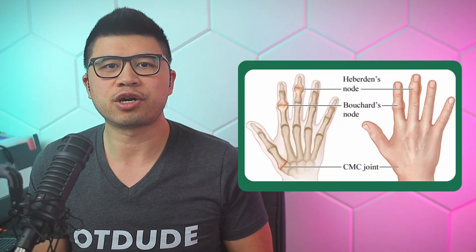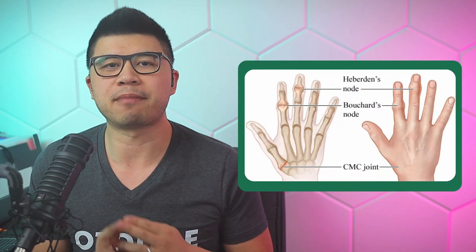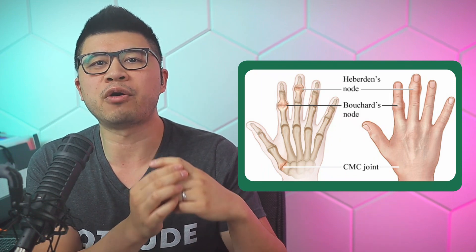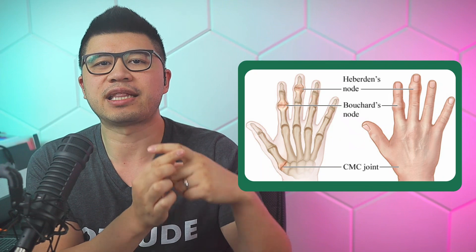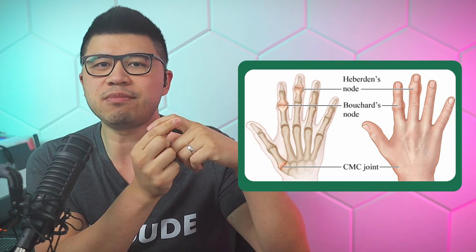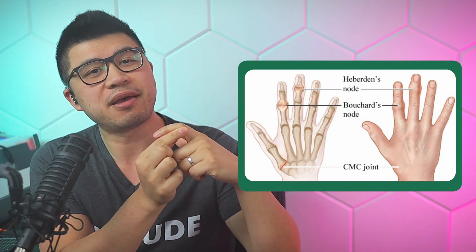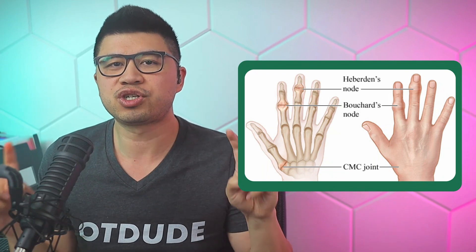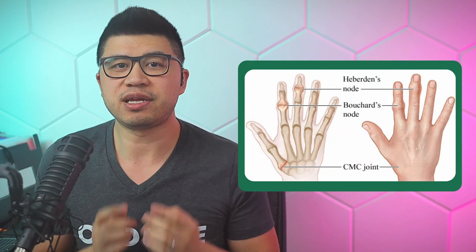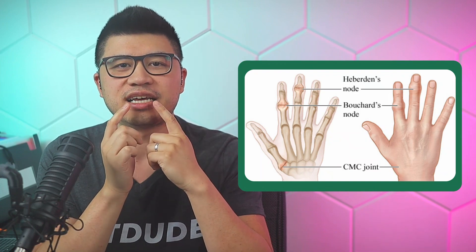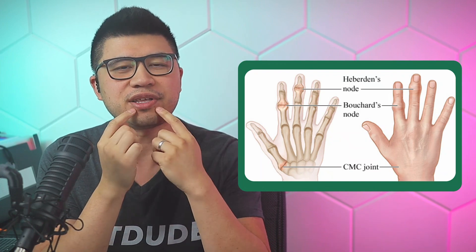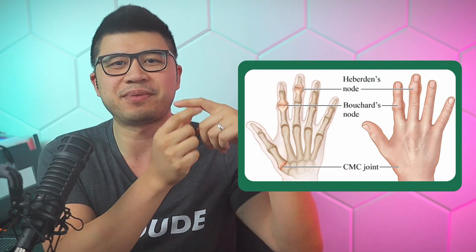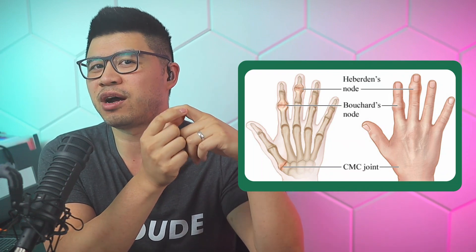For the hand, two terms to know are Heberden's and Bouchard's nodes. Bouchard's nodes are the small bony growths or lumps at the PIP joint, and Heberden's nodes are the same but at the DIP joint. To remember this, the word Bouchard actually means mouth, and the mouth is more proximal — as in the proximal PIP joint for Bouchard's nodes.